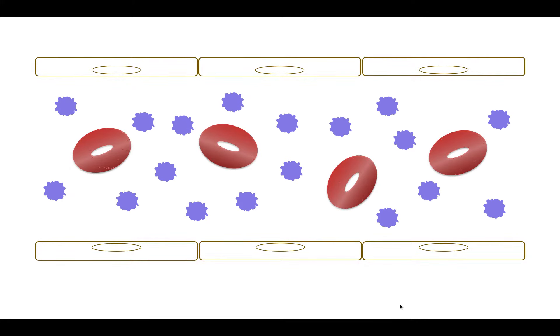If we look closely, we can see that the endothelium is producing both nitric oxide and prostacyclin. Nitric oxide and prostacyclin work together to prevent the adherence of platelets on the intact endothelium.